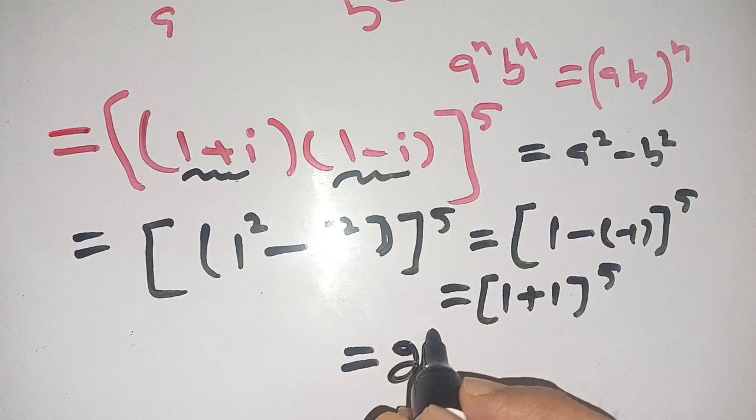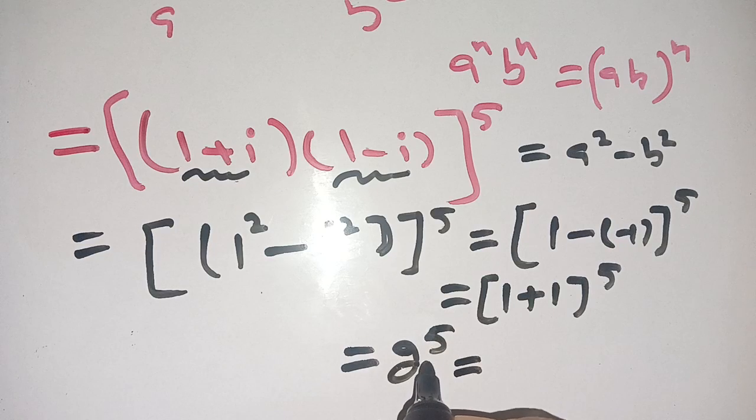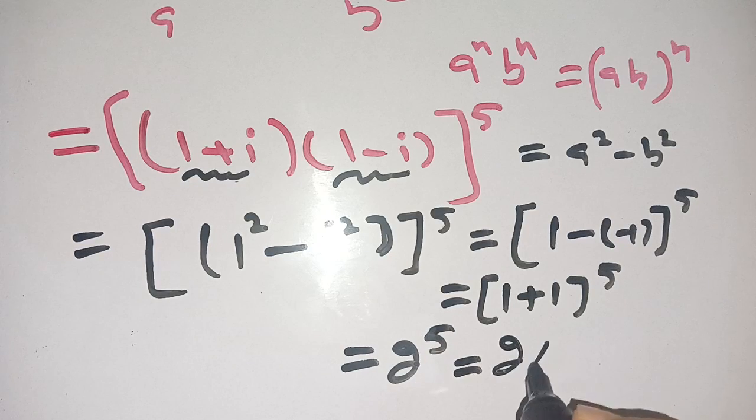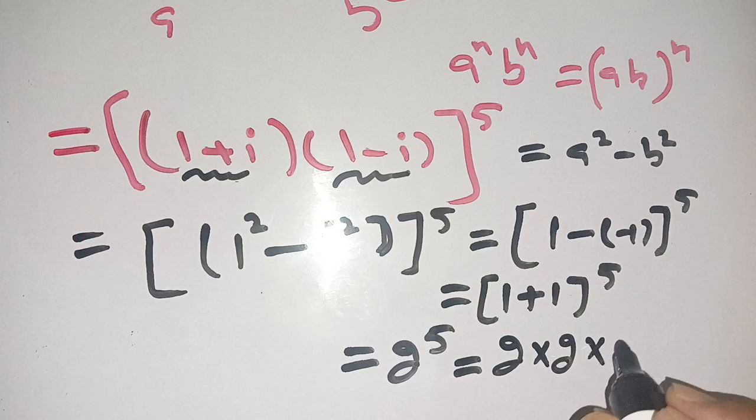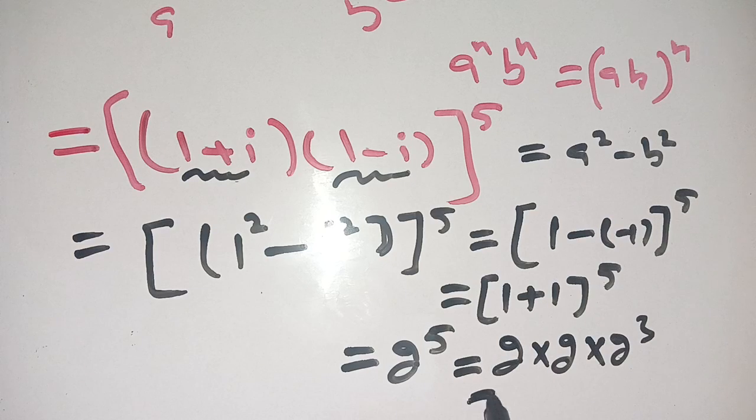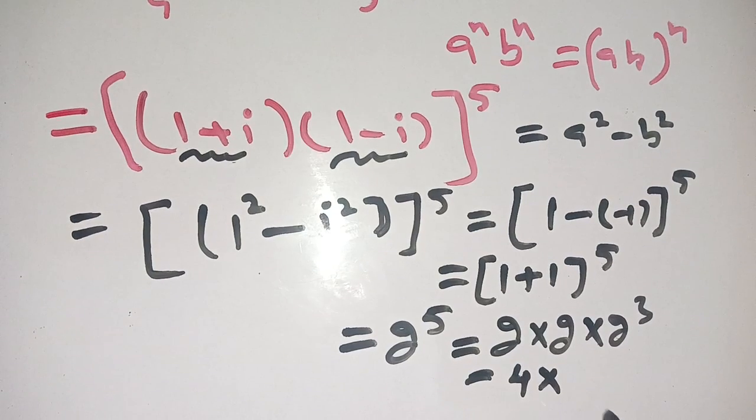It is equal to 2^5, which is 2 × 2 × 2^3. This equals 4 × 2^3, which becomes 4 × 8.